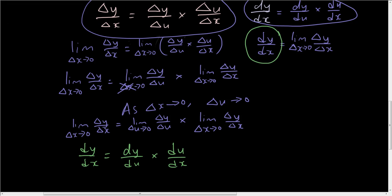Hopefully you guys have a better understanding of how this works. I just made a small mistake — this should say u, not y. You don't really need to understand this in order to use the chain rule, but it kind of helps you see where the chain rule comes from.